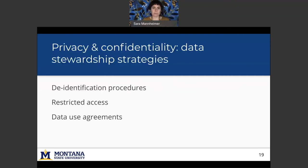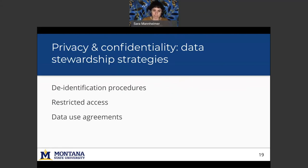So let's look at some data stewardship strategies to support privacy and confidentiality. We can support the idea that big social data is human subjects data and connect it to qualitative data stewardship in that way. So supporting de-identification procedures, delete names or replace them with pseudonyms, remove any details about participants' lives. And then you can also aggregate data to support de-identification.